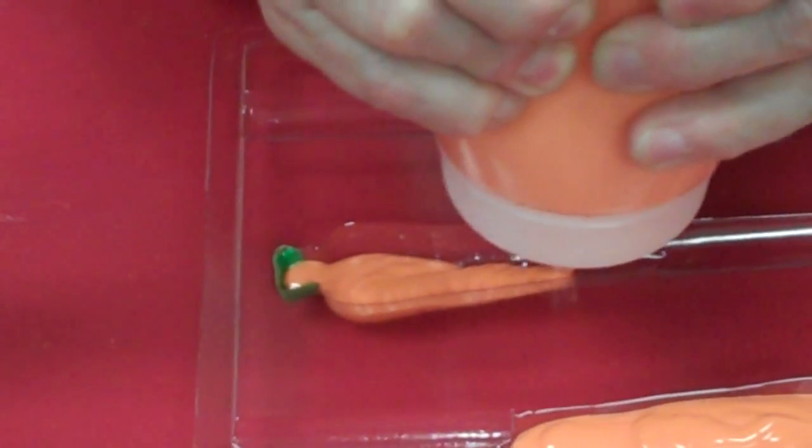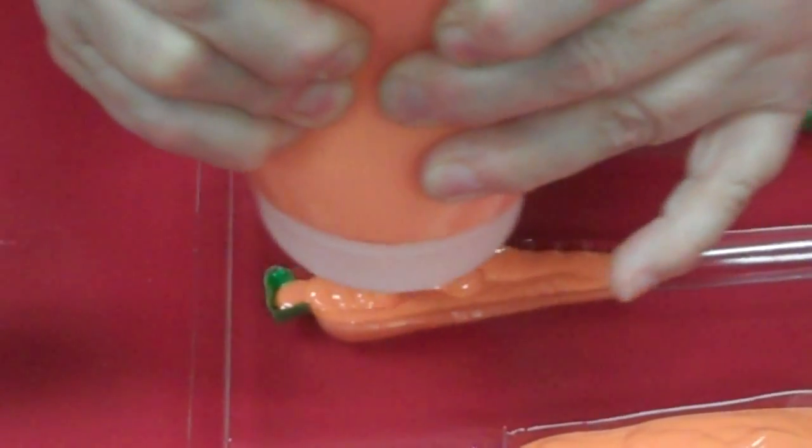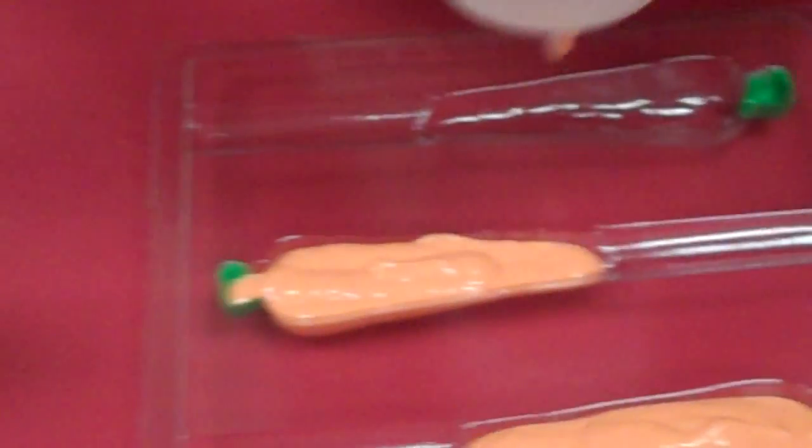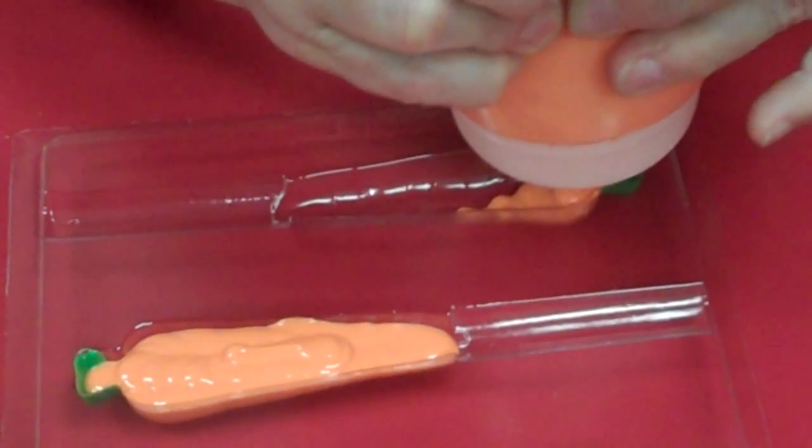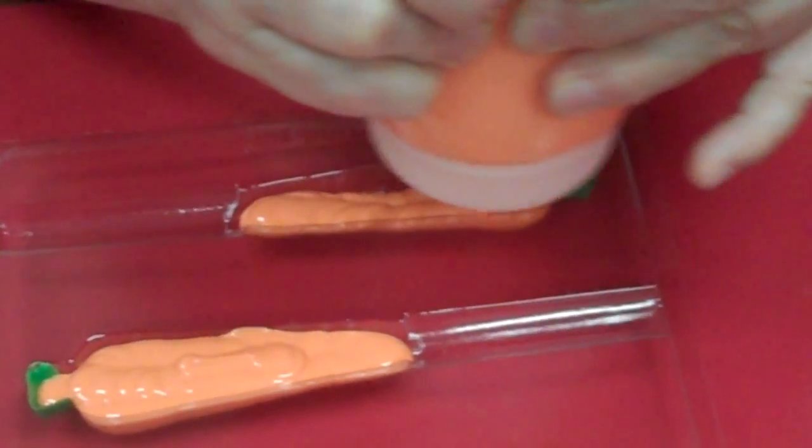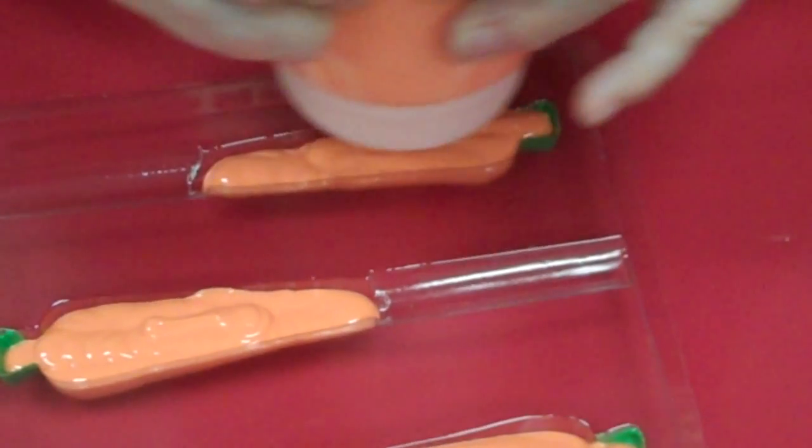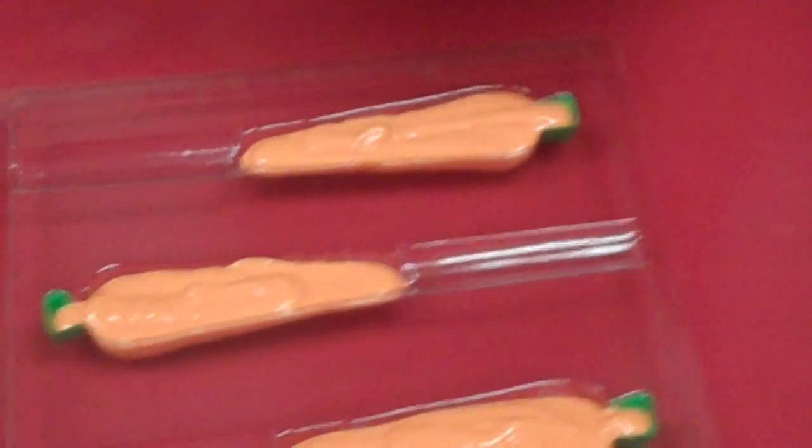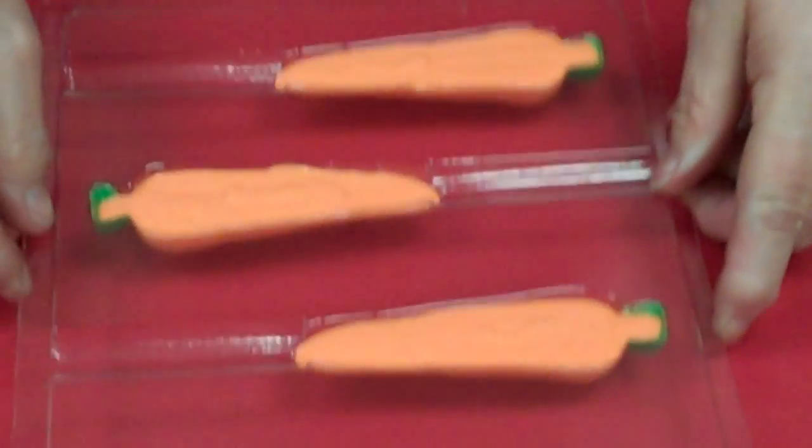Now this is just white chocolate tinted to orange. Tastes really yummy. Old kids like it. Those of you who like milk or dark chocolate, I'm sure you can do them in milk and dark chocolate too. Over here we're going to give them a nice little tap.